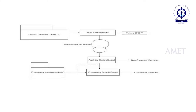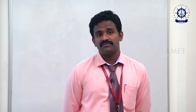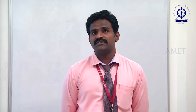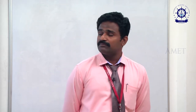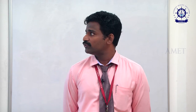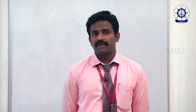From this picture, we can see a simple block diagram showing the interrelation between the main generator and the emergency generator. The main generator gets its supply from diesel and produces 6.6 kV. That supply goes to the main switchboard. From the main switchboard, a transformer steps down the voltage and sends it to the auxiliary switchboard for non-essential services.